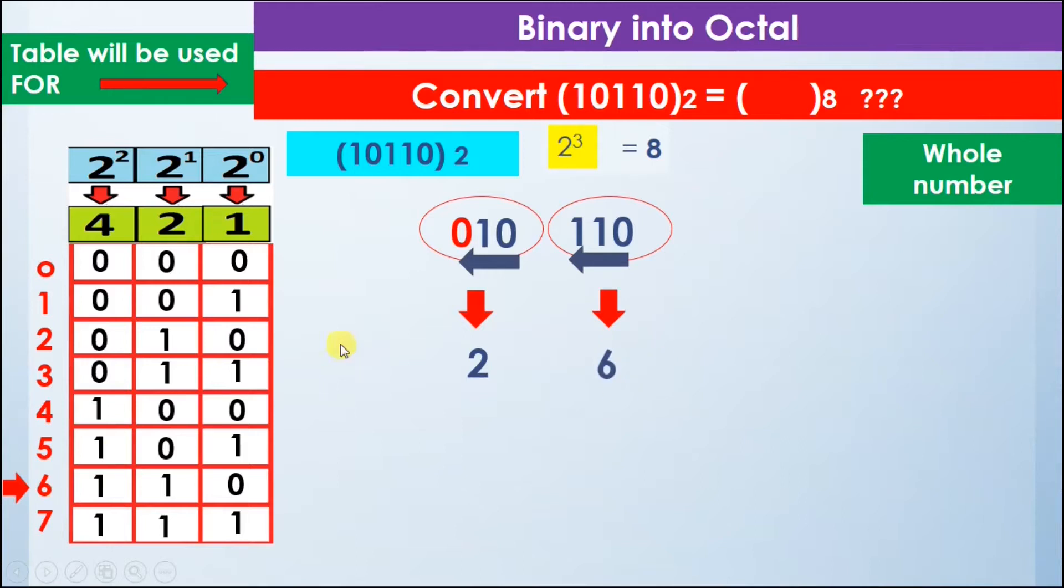We write 6 here. Now we combine the answer, which makes 26 in octal. The whole number in binary, 10110, is equal to 26 in octal. This is how we can convert a binary number into an octal number.